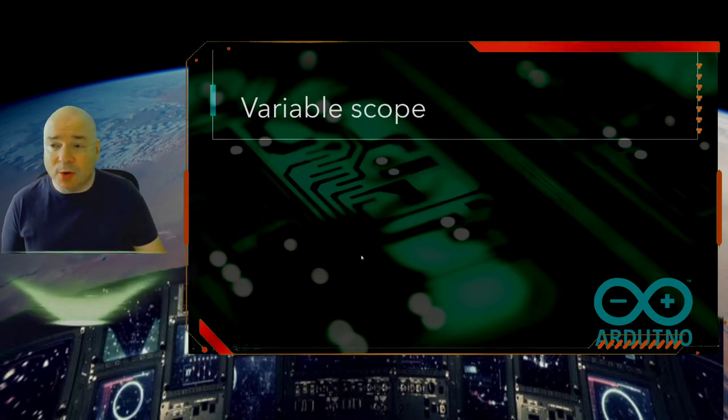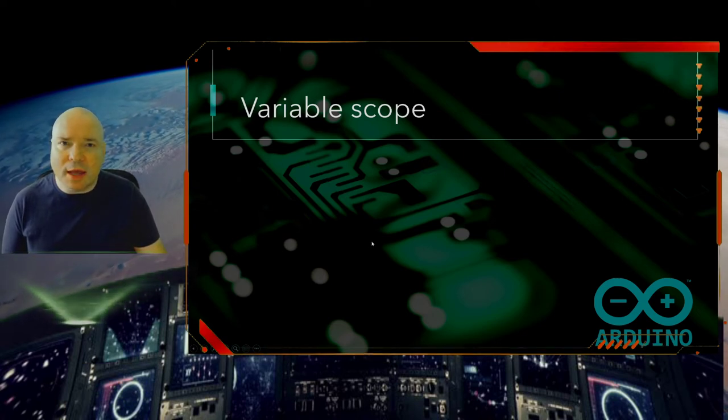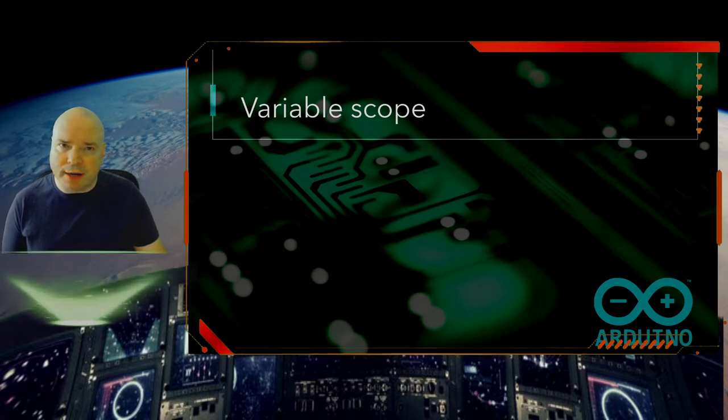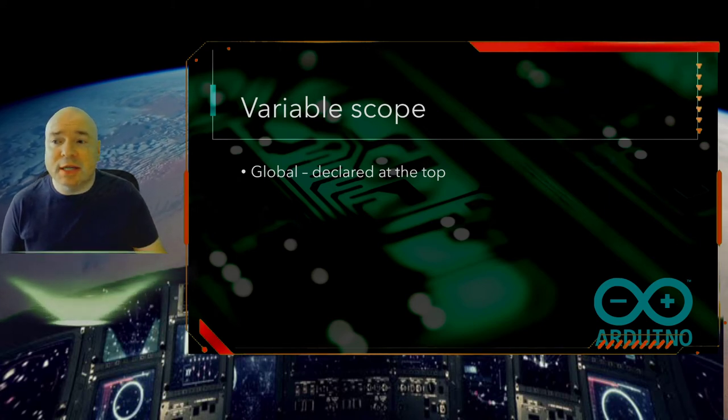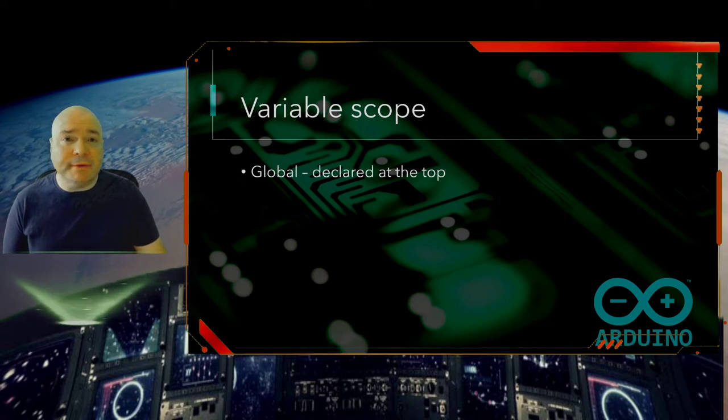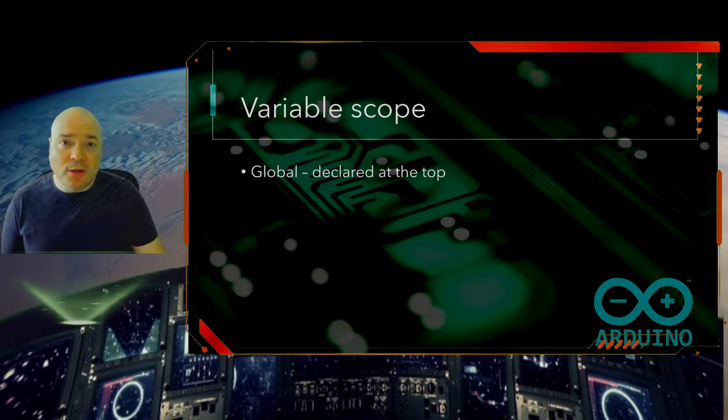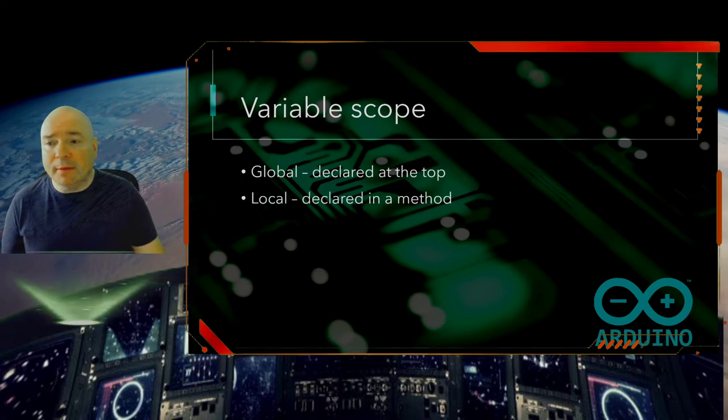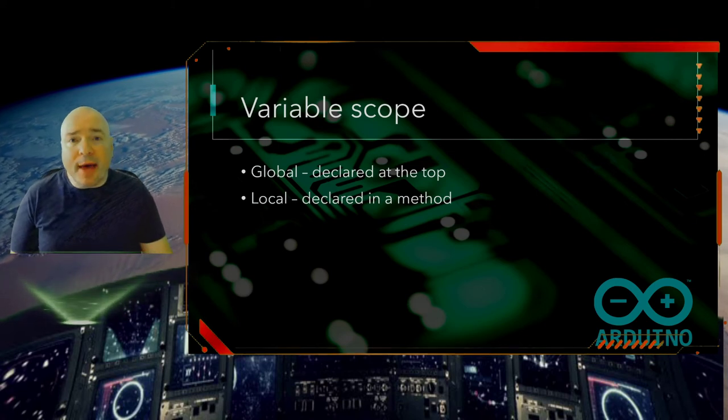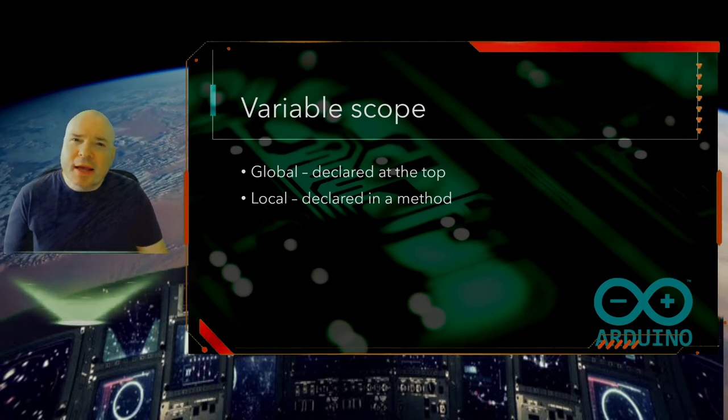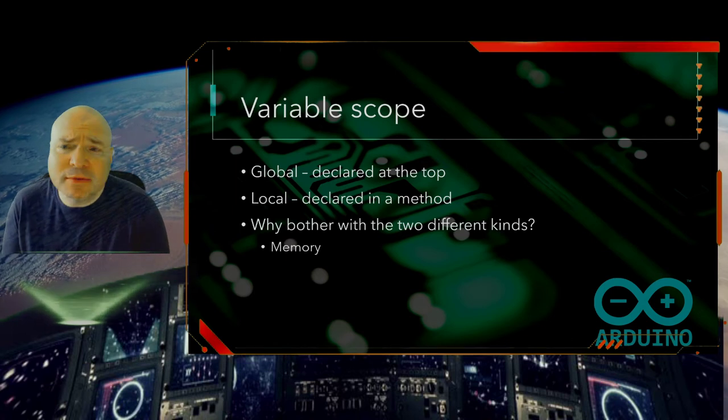So let's talk about variable scope. Variable scope, we had mentioned before, is the variables are declared within their curly brackets. There are two kinds of scope. There is the variables that are declared at the top, which is called global. So if we are outside of any curly brackets and we're at the top, that's global. And that means anything can use those variables. They exist for everywhere inside the program. Then there's local, which means it only exists within the method that it was created.